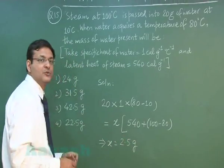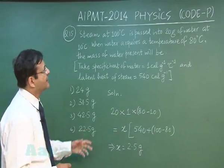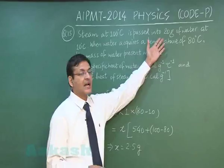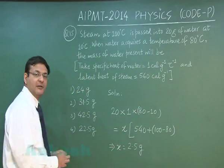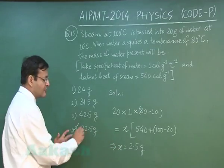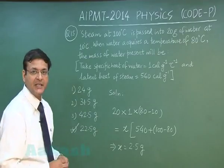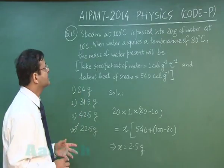So this is the amount of steam you have used but finally this will become water at 80 degree Celsius and it will be adding on to this 20 gram. So total amount of water present at 80 degree Celsius will be the sum of these two, 20 gram plus 2.5 gram. So in total 22.5 gram water will be present at 80 degree Celsius and that is the answer of the question required in this.